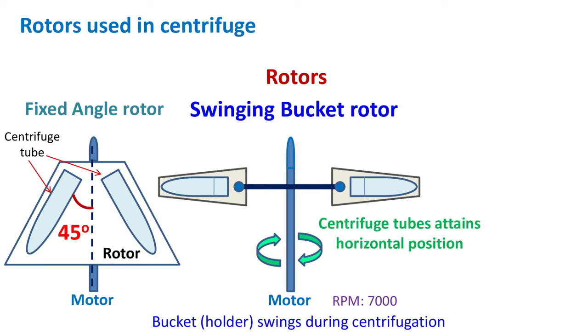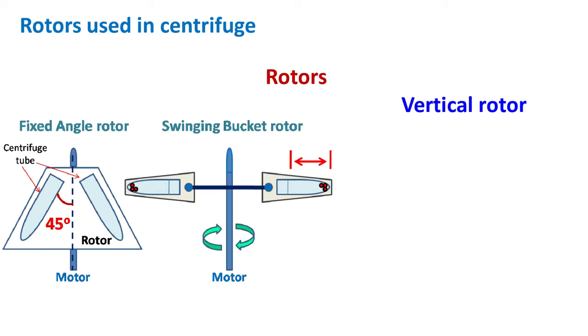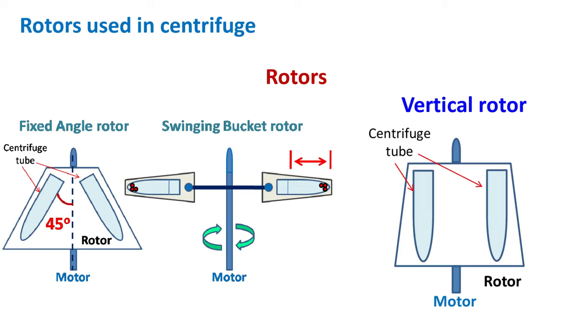Because of this, the path length traveled by the particles is maximum. The particles also take long time to settle as it travels from the top to the bottom of the tube. In vertical rotors, the centrifuge tubes are held in vertical position. Here the path length traveled by the particles is minimum as they are moving from one side of the tube to the other and not from the top to bottom. The particles are usually accumulated on the side of the tube.